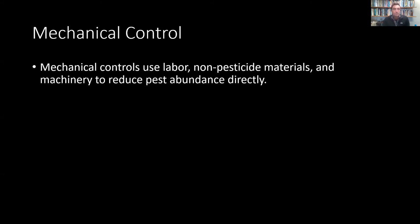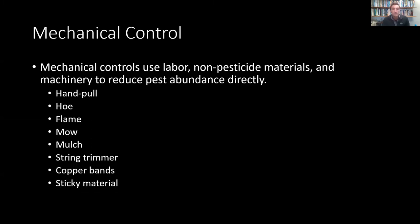Mechanical control uses labor and non-pesticide materials, and may include machinery to reduce pest abundance directly. This could be hand pulling, using hand tools such as a hoe, using fire or torches to eliminate weeds, mowers, applying mulch, using a string trimmer to cut down weeds, or applying copper bands and sticky material to the trunks of woody trees and shrubs to disrupt transportation of pests into the plant.